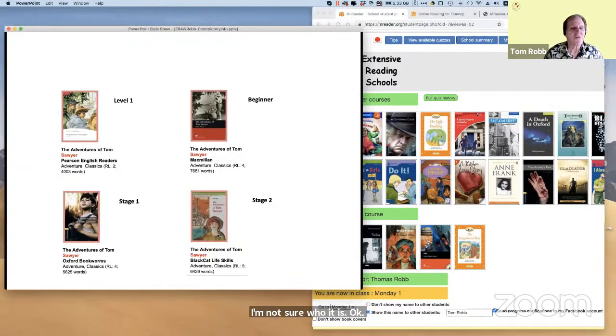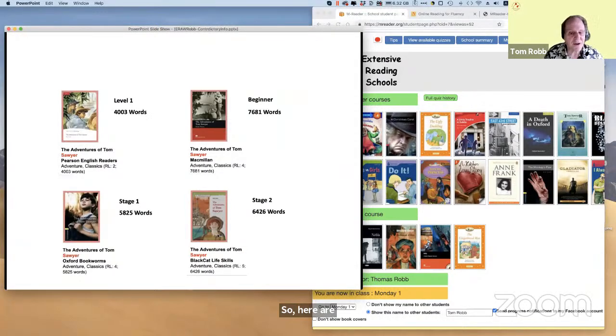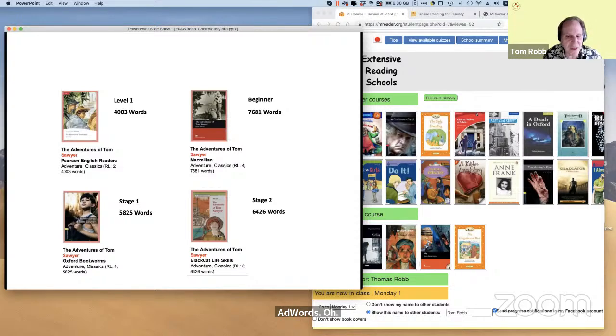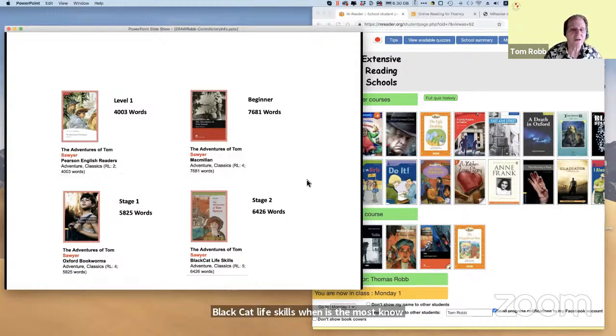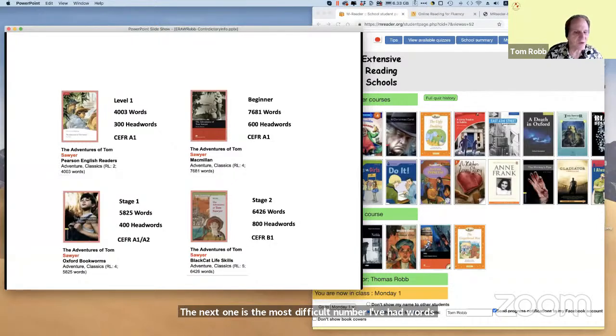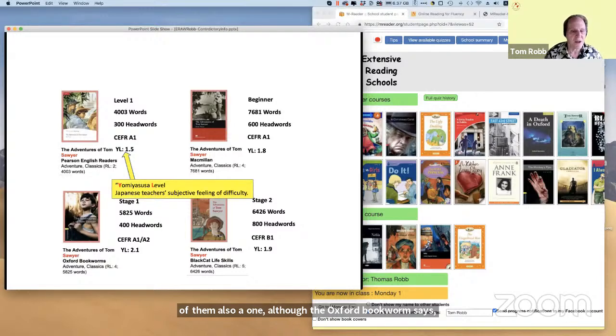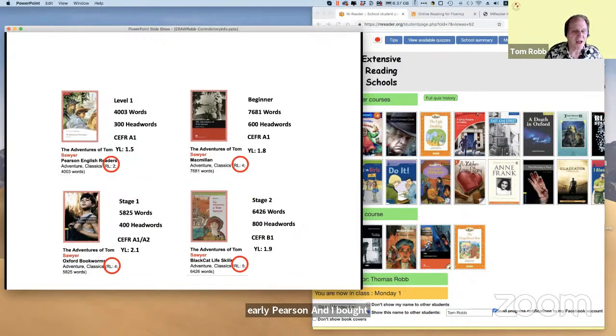So here are three, four books of Tom Sawyer, and they're at different head words. So if you look at the head words, oh, the written one is the most difficult. And the Black Cat Life Skills one is the most, no. The Macmillan one is the most difficult. Number of head words, the Black Cat one. The CEFR level, well, three of them all say A1, although the Oxford bookworm says both A1 and A2. The Yomi Yasasa level, clearly Pearson. And I've already defined that.